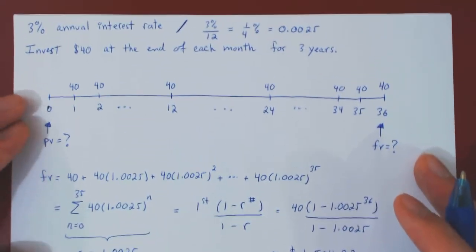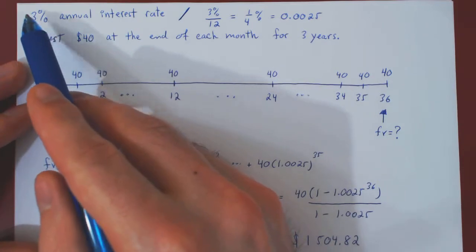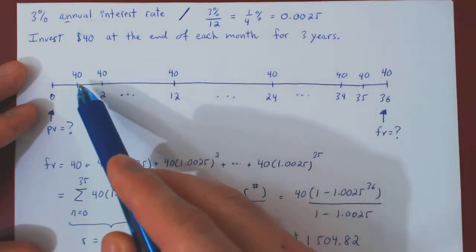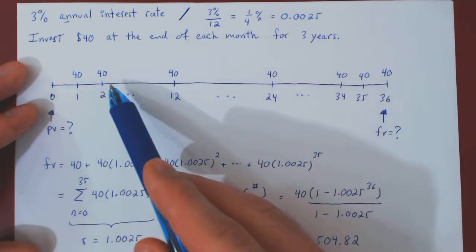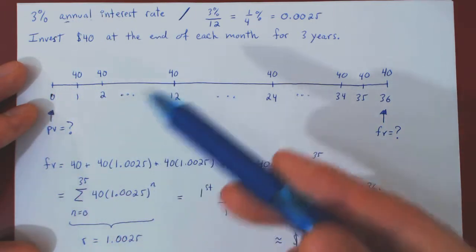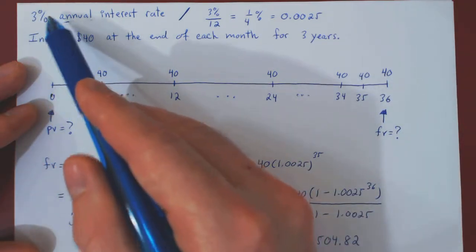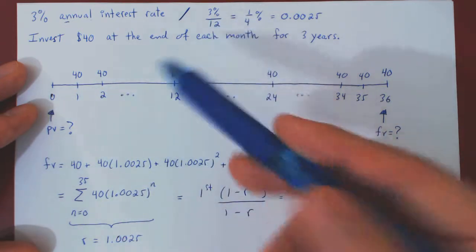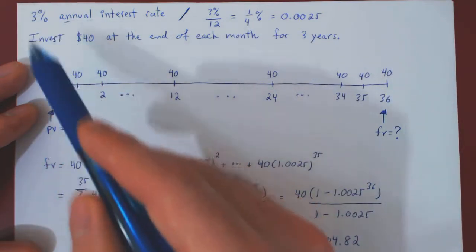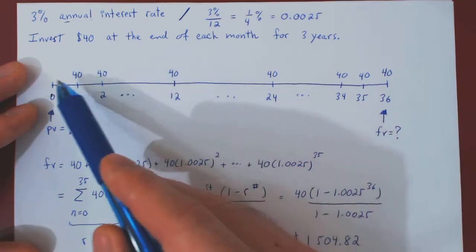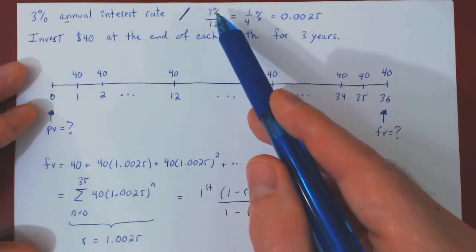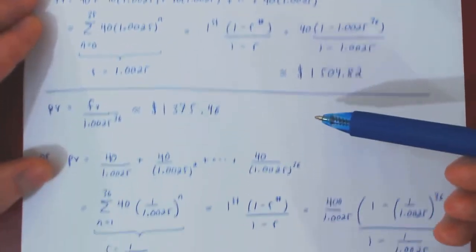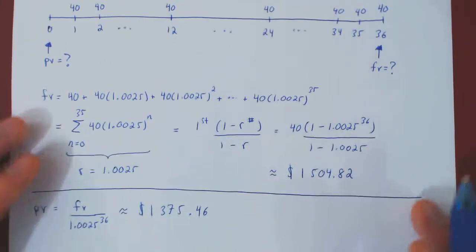This is essentially the same situation as in the previous video — the only twist was the interest rate. We were given an annual interest rate but had to move investments over time intervals of one month, not one year. Since there are 12 months in a year, we divided the annual interest rate by 12: if 3% is for the whole year, then for one-twelfth of it, it must be one-twelfth of 3%, therefore 0.0025. From that point on, everything was done exactly as in the previous example.